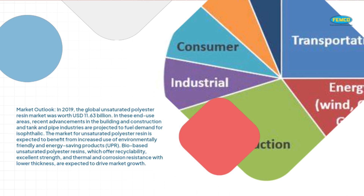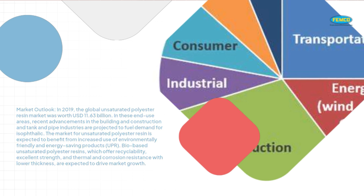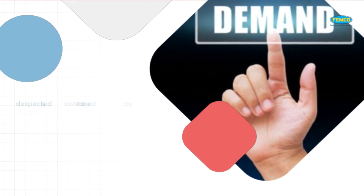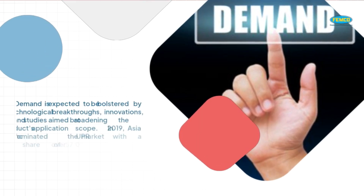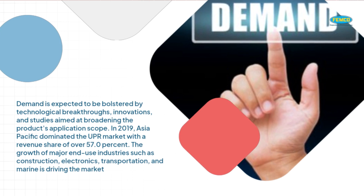Bio-based unsaturated polyester resins, which offer recyclability, excellent strength, and thermal and corrosion resistance with lower thickness, are expected to drive market growth. Demand is expected to be bolstered by technological breakthroughs, innovations, and studies aimed at broadening the product's application scope.